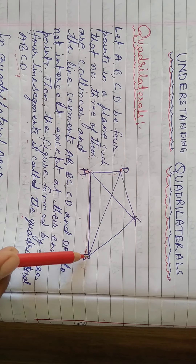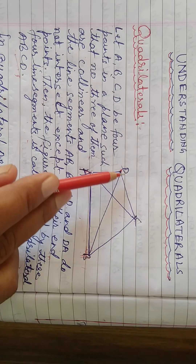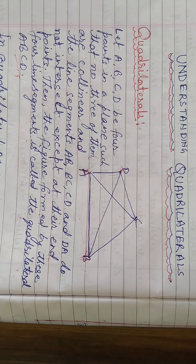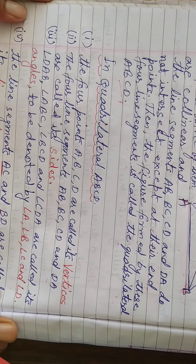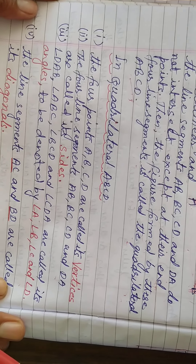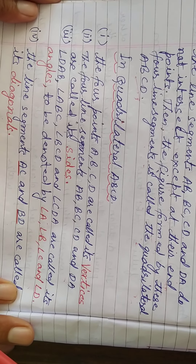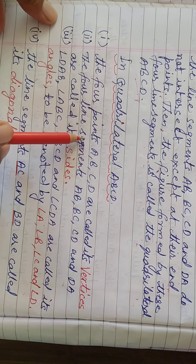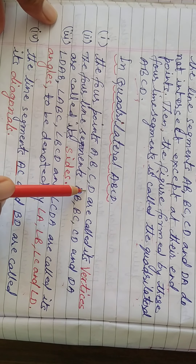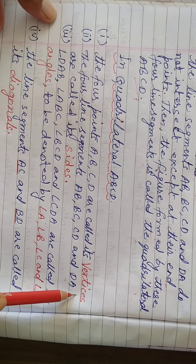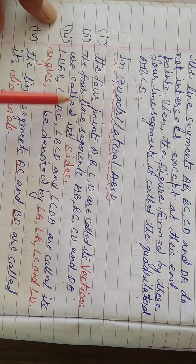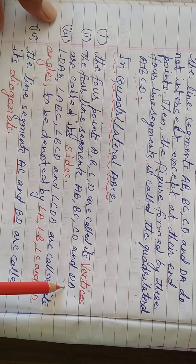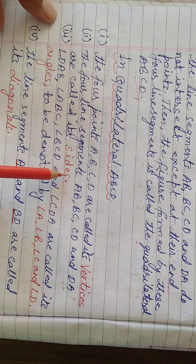Sides AB, BC, CD, and DA are the sides. In particular, the four points A, B, C, D are called its vertices. The four line segments AB, BC, CD, and DA are called its sides.